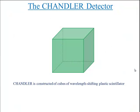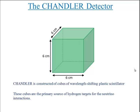Chandler is constructed of cubes of wavelength shifting plastic scintillator, 6 x 6 x 6 cm on a side. The cubes serve as the primary source of hydrogen targets for the neutrino interaction.